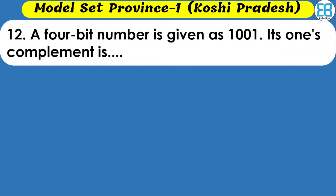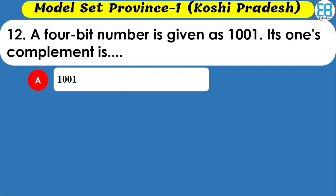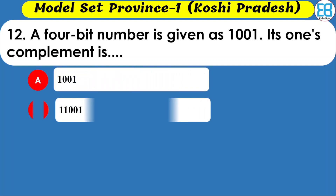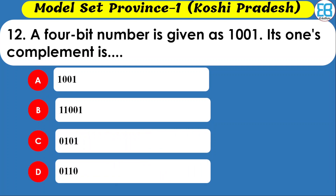A 4-bit number is given as 1100. Its 1's complement is to be found. Options include one zero zero one, one one one zero zero one, zero one zero one, and zero one one zero one. The correct option is 0011 — flipping all bits of 1100 gives 0011.